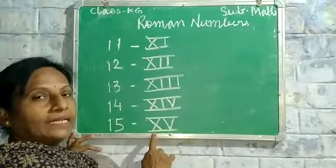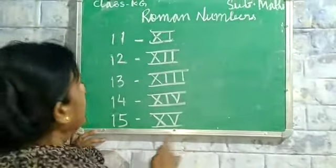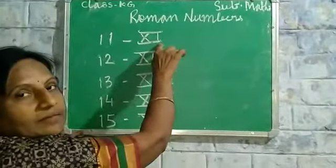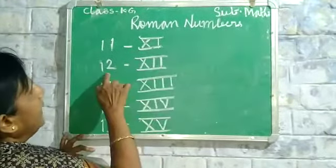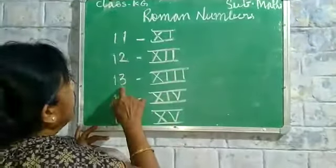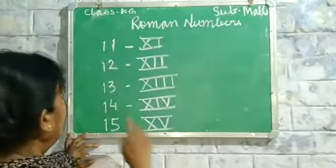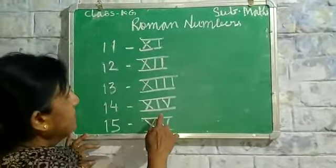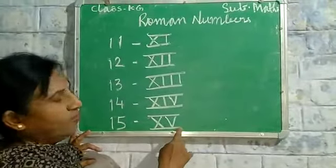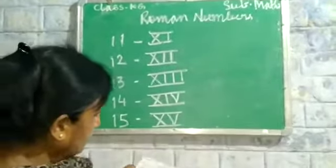Roman number X and V — 15 is the Roman number. Let me review: 11 is X and I, 12 is X, I, I, 13 is X, I, I, I, 14 is X, I, V — 14 is X and V, 15 is Roman number X and V.